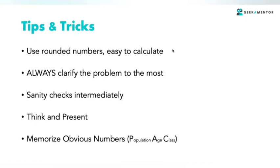Always clarify the problem to the most. Do sanity checks intermediately like we had. At the time of AC example we mentioned that we know how many ACs are there, but we don't know how many ACs are getting sold, so then you make a sanity check and how you come to that further solution. You took a life cycle.